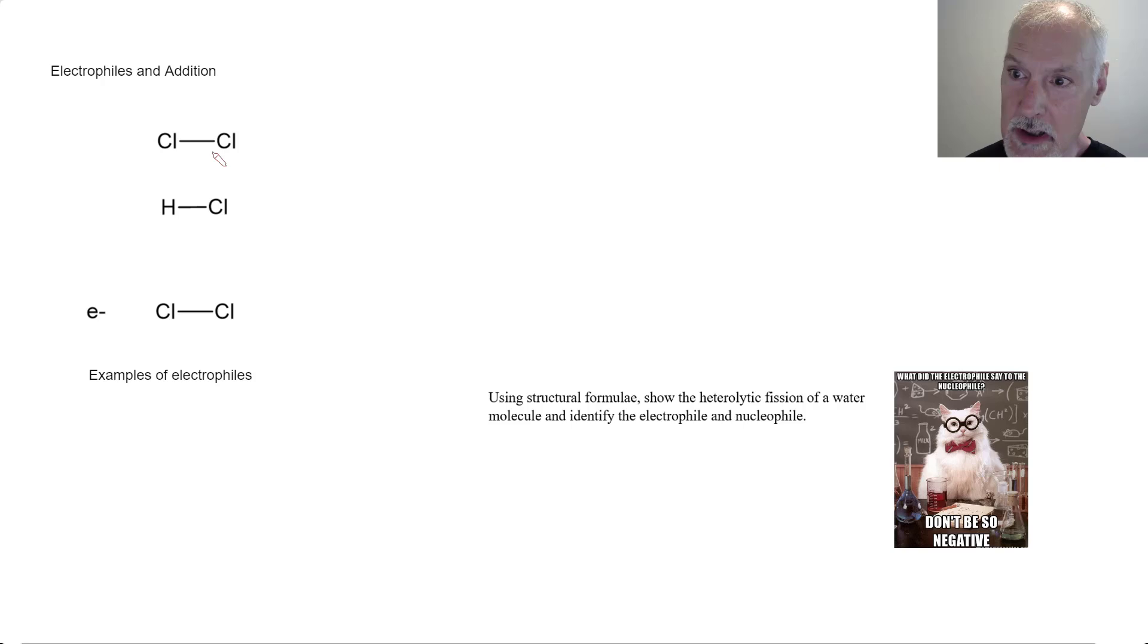If we have chlorine bonded to chlorine and we subject it to UV light, the electrons that are in this bond will move. One will move this way, and one will move this way. Hence, I use the single barbed arrow. This is an example of what we call homolytic fission. This will then result in the production of two radicals, two chlorine radicals. So we'll get two of these.